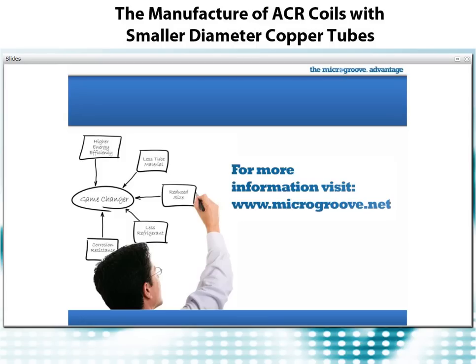Looks like we have time for one more question. You said there was data to show how much refrigerant can be saved with micro-groove tubes versus aluminum micro-channel — where can I find that? I would refer to the last webinar we did, which can be found on the microgroove.net website in the overview section under webinar on demand. And again, if there isn't enough information there, give us a call or leave us an inquiry and we can certainly get back to you.